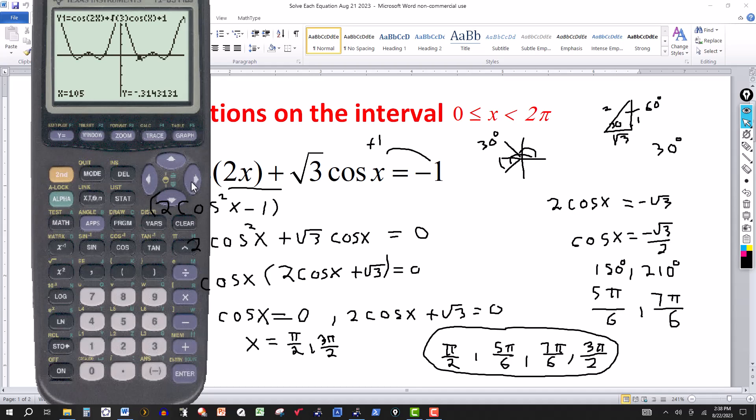Continue with the trace here. And slow down when you get to the next point where the graph crosses the axis. There it is, 150, or 5 pi over 6.